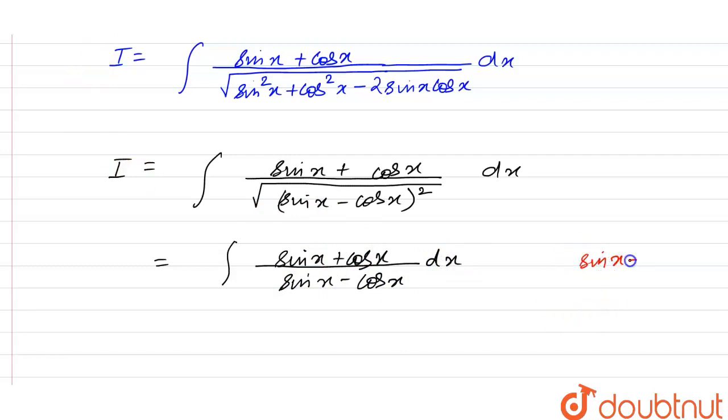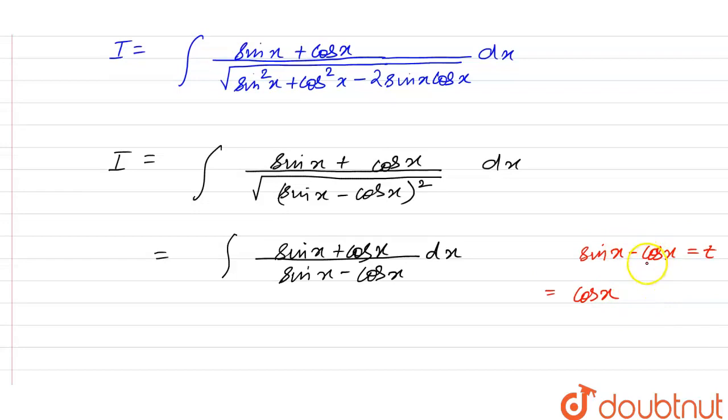So if we put this sine x minus cos x is equal to t, then we have cos x, and differentiation of cos x is minus, minus sin x, with respect to dx this is dt.